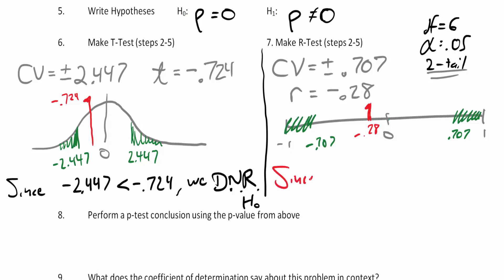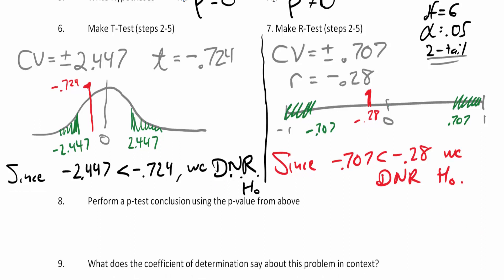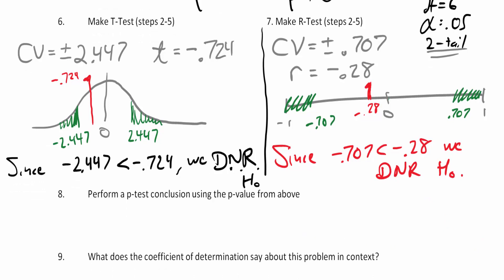Since negative 0.707 is less than negative 0.28, we are not in the critical region — do not reject the null hypothesis. All three tests should agree. If you get one that says reject and another that says do not reject, contact me immediately — something went wrong. Both t-test and r-test are matching, which gives me confidence the problem is done correctly.